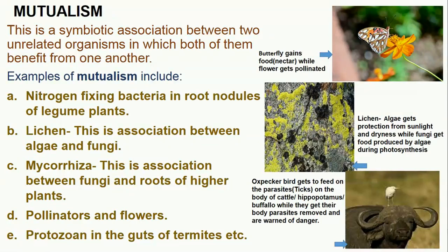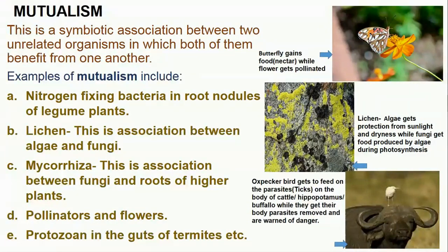Another example is pollinators and flowers — examples of pollinators include butterflies, bees, moths, and some birds. A butterfly gains food known as nectar from the flower, while the flower gets pollinated. Another is protozoa in the guts of termites — the termites feed on wood cellulose but cannot digest it, so protozoa in their gut do the digestion, while the termites protect the protozoa. Another is oxpecker birds and mammals such as cattle, hippopotamus, and buffalo — the birds feed on parasites, benefiting the host by removing parasites and warning of dangers in the environment.